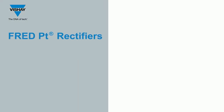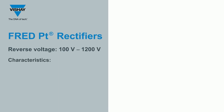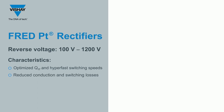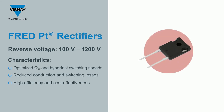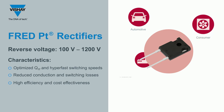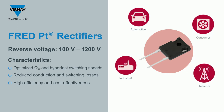With reverse voltages from 100 volts to 1200 volts, FRED PT rectifiers are characterized by optimized QRR and hyperfast switching speeds, reduced conduction and switching losses, high efficiency and cost effectiveness. They are ideal for high voltage applications such as automotive, consumer, industrial, telecom and EV/HEV battery charging.